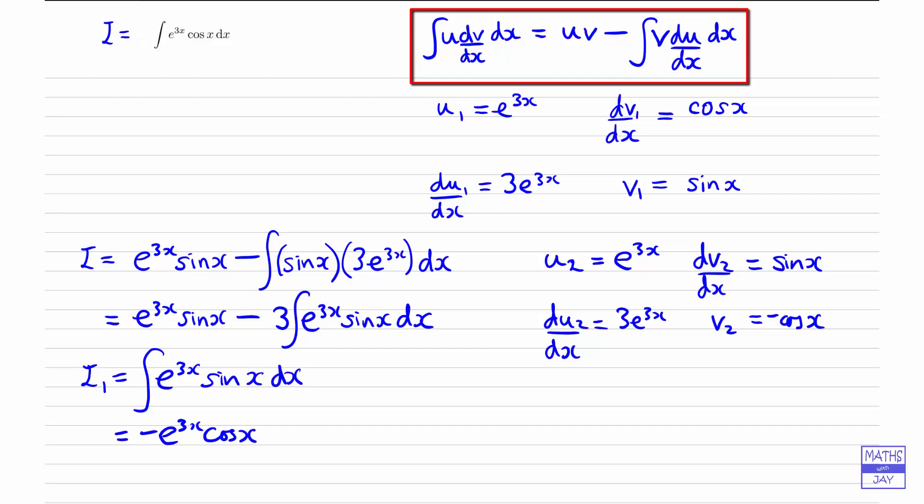And then we're going to be subtracting 3e to the 3x multiplying minus cosx. So there are two negatives there. So we could write that as a plus. And we can take the 3 outside the integral. And then we're left with e to the 3x cosx.